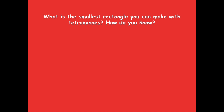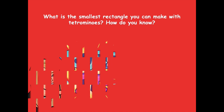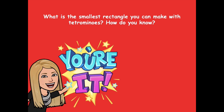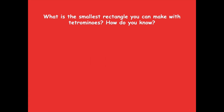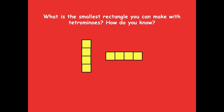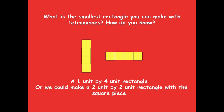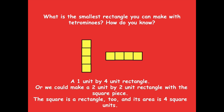What is the smallest rectangle you can make with tetrominoes, and how do you know? Pause the video, look at your shapes and tetrominoes, and see what the smallest rectangle you could make is. Here's what I came up with — just these two: a one-by-four unit rectangle, or we could make a two-by-two unit rectangle with the square piece, because the square is a rectangle too, and its area is four square units.